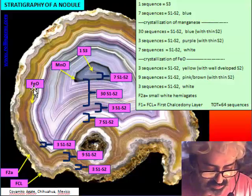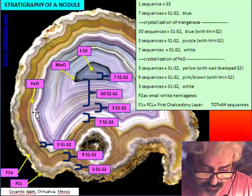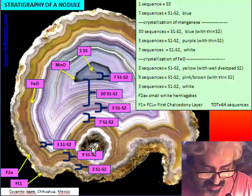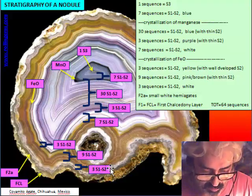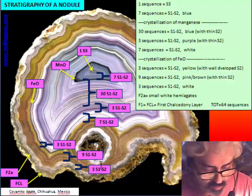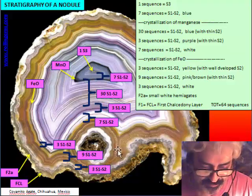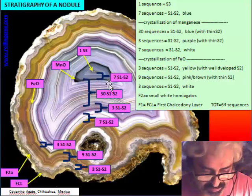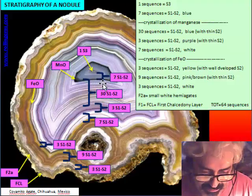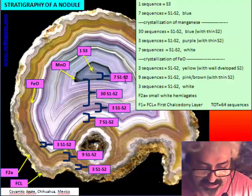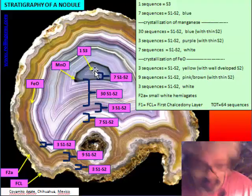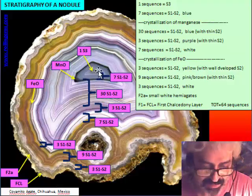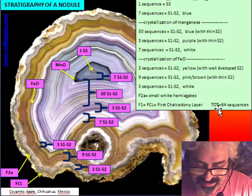They are pink-brown. There are three sequences in yellow color. Then there is decrystallization of iron, and we start again with white sequences — seven white sequences S1, S2. All the sequences are S1, S2. There is no quartz, but there is always the presence of S2. Then there are three S1, S2 in violet color, thirty S1, S2 in more pale blue color. Then there is the manganese band. The last bands are seven sequences S1, S2, and in the middle there is a small crystallization of quartz — one S3. So the total is 74 sequences.